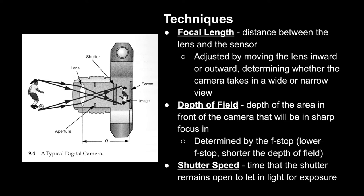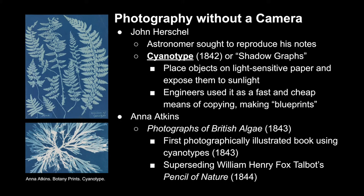Not all photography is done with a camera. When seeking out means of reproducing his notes, astronomer John Herschel created the cyanotype in 1842. This process was also called the shadowgraph because it involved taking a paper coated in light-sensitive chemicals, putting objects on top of it, and exposing it to the sun. Where objects cast shadows, the paper remains white, while everywhere else turns a dark blue — giving it its nickname of a blueprint. Engineers often used this process to create fast and cheap reproductions of their notes and designs.